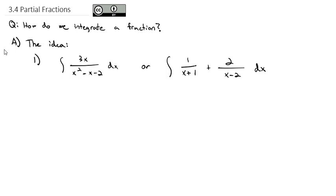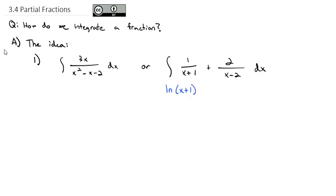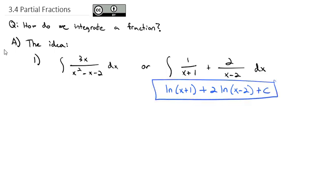The first one, we don't really have a way to integrate. We could try u-substitution with u equals x squared minus x minus 2, but then du would be 2x minus 1 dx. The numerator is 3x — there's no minus 1, so that's not going to work. The second integral, we know the integral of 1 over anything is the natural log of that stuff, as long as the derivative is 1. That gives us 2 times the natural log of x minus 2 plus a constant — and that quickly we're done. That's the idea behind what's called partial fractions.